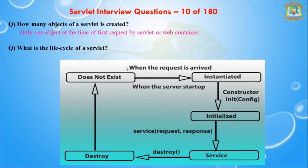The third phase is the servlet is initialized — after instantiating, the container calls the init method of the servlet and the values given in the init method are initialized. After that, the service method is executed to service the request. Finally, the object is destroyed using the destroy method.